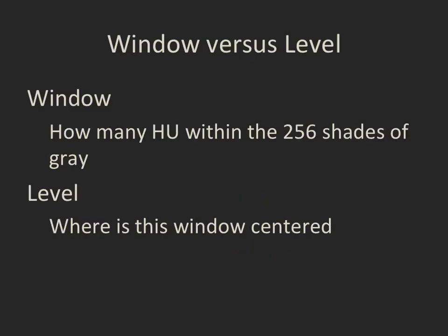So we can display every CT scan using two values. The window is how many Hounsfield units we concentrate within those 256 shades of grey — and that can be a very narrow one, such as in the brain, or a much wider one as we use for lungs and bone. The level is where on the Hounsfield scale of minus 1,000 to plus 1,000 we center that window.